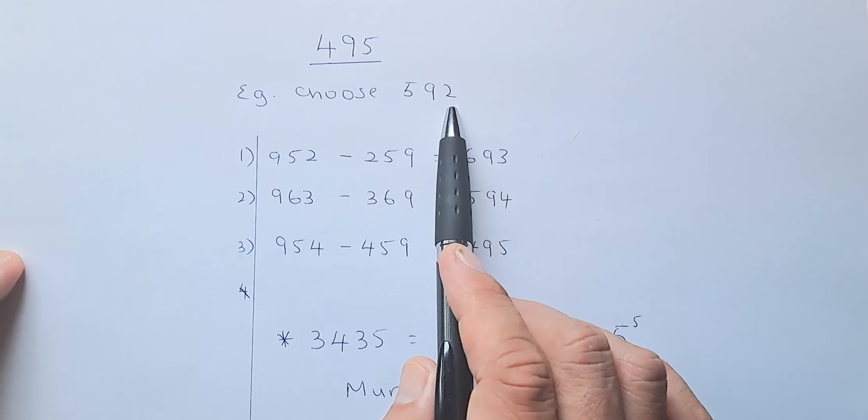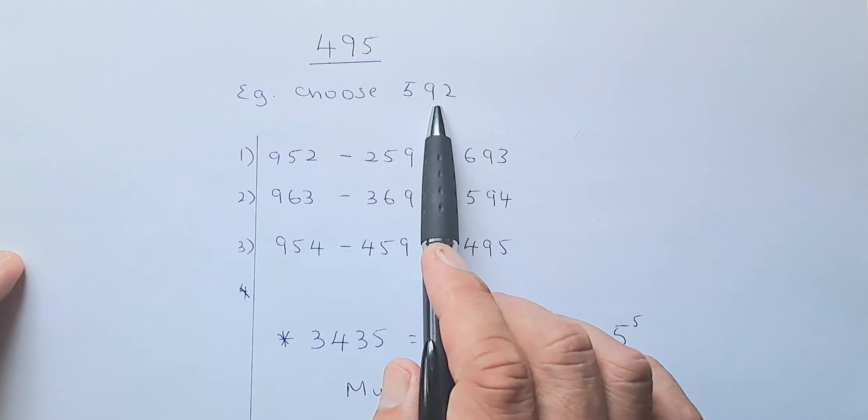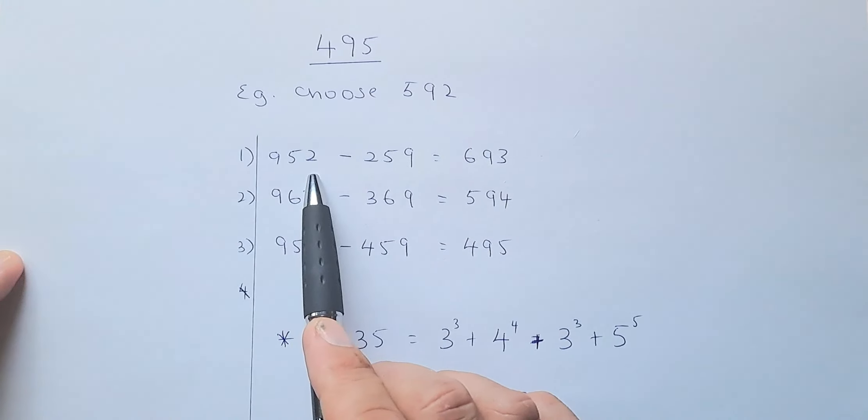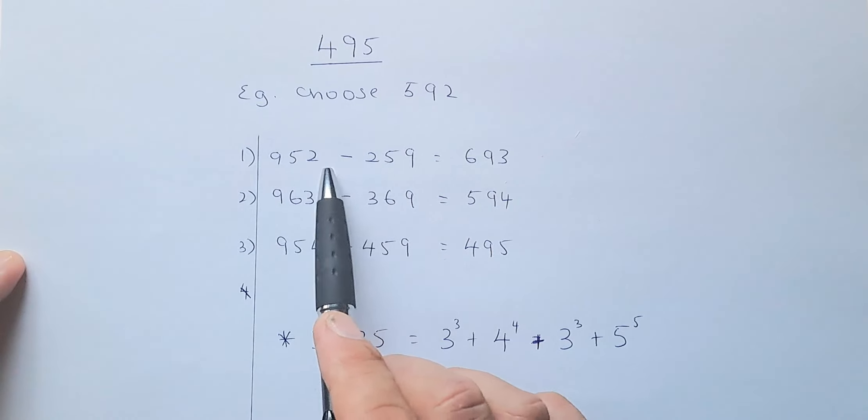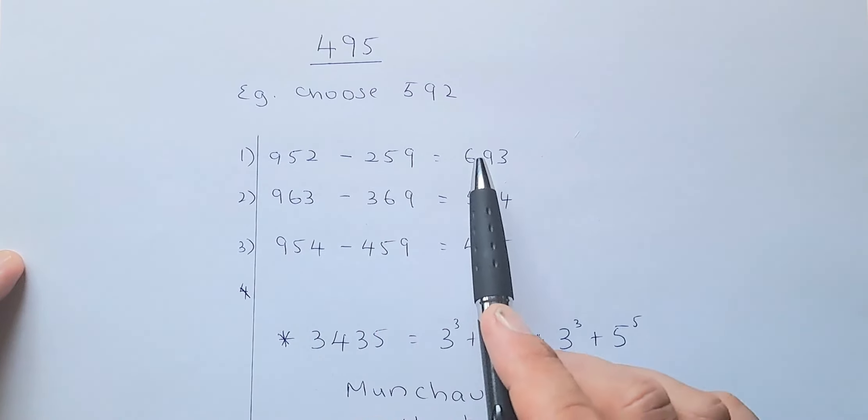First step, you need to arrange from biggest to smallest, the number becomes 952. Then you're going to minus the reverse of this, or the smallest to biggest. So minus 259, and you get 693.